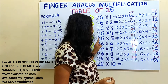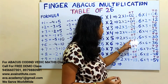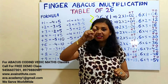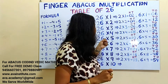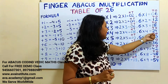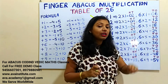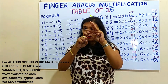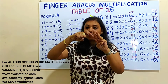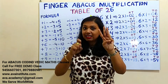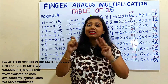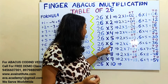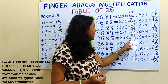26 fives are: 2 fives are 10 — in hundreds 1, in tens 0. Now 6 fives are 30 — in tens 3, in ones 0. So in hundreds it is 1, in tens: 10, 20, 30 — 30, in ones 0. The answer is 130.